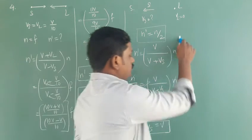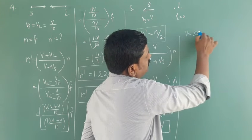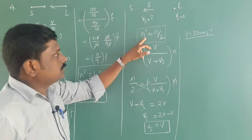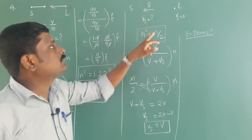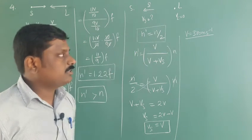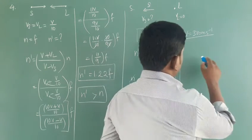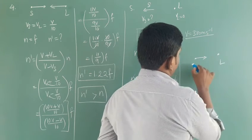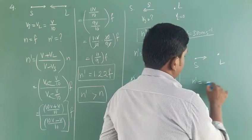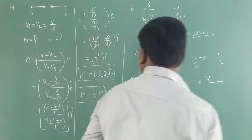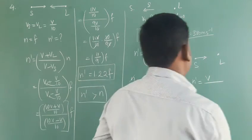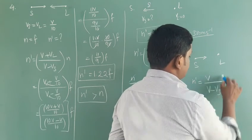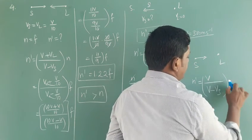So at the velocity of sound — 330 meters per second — when the source moves away from the stationary listener, the frequency heard by the listener is half of the frequency created by the source. Now, when the listener is at rest and source moves towards, the formula is N dash equals V minus Vs divided by V, times N. When the listener is at rest and source moves away, the direction changes.